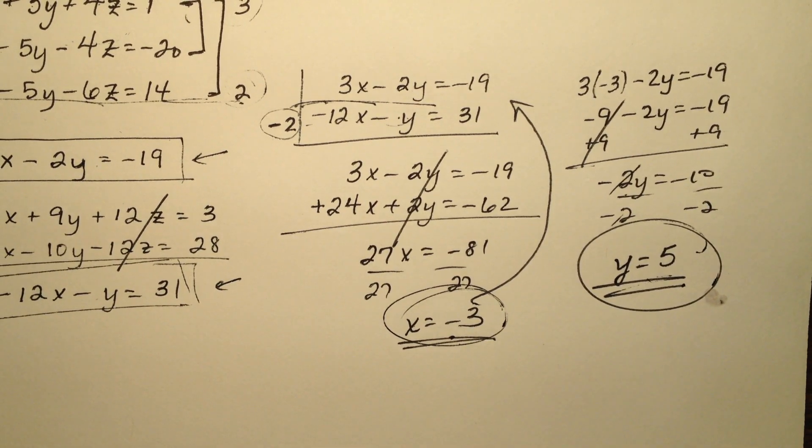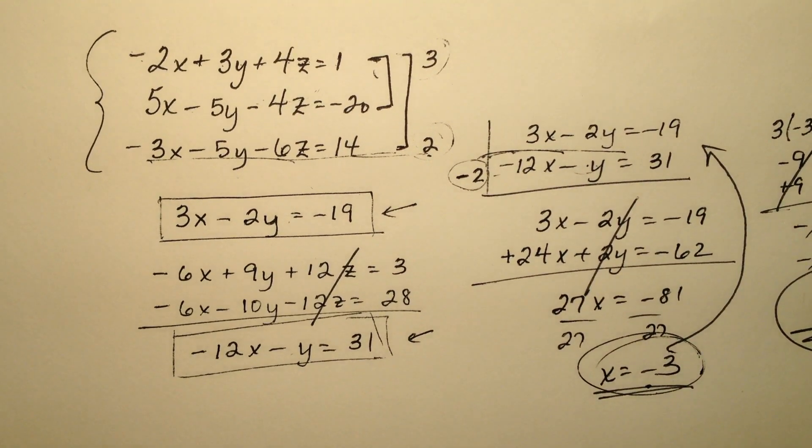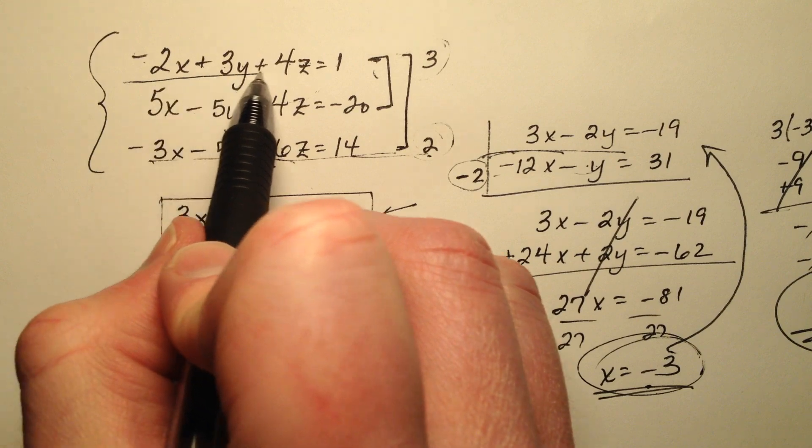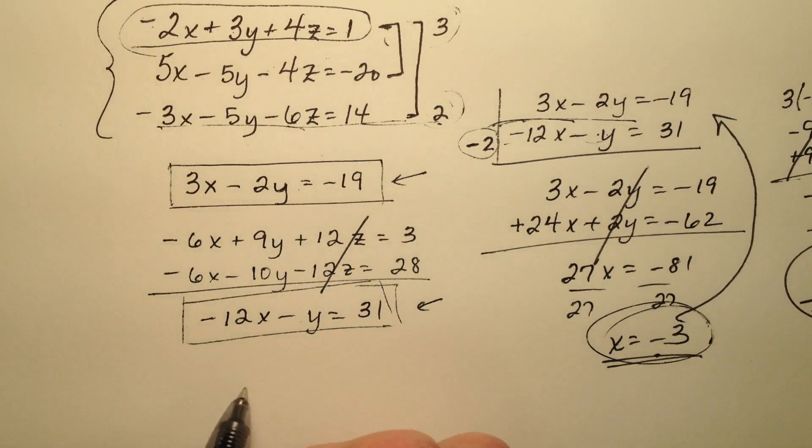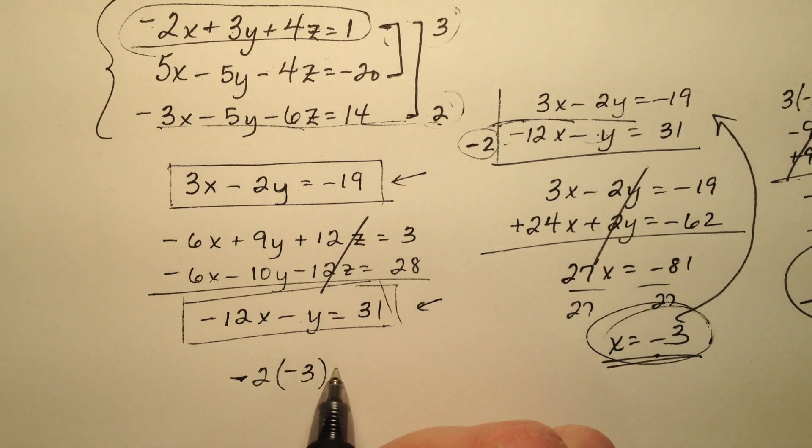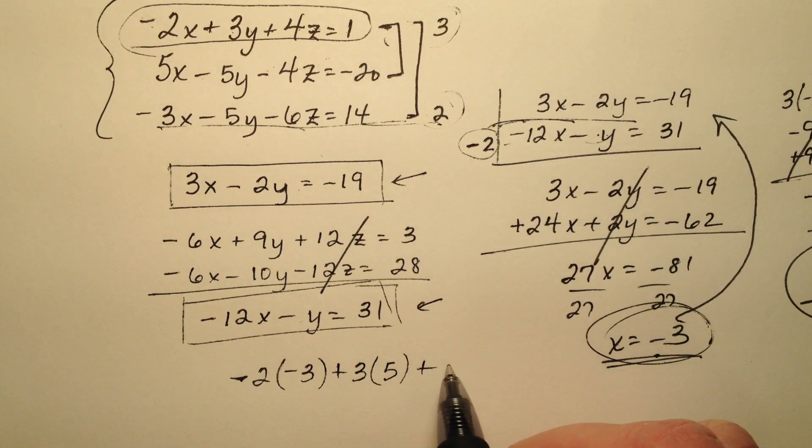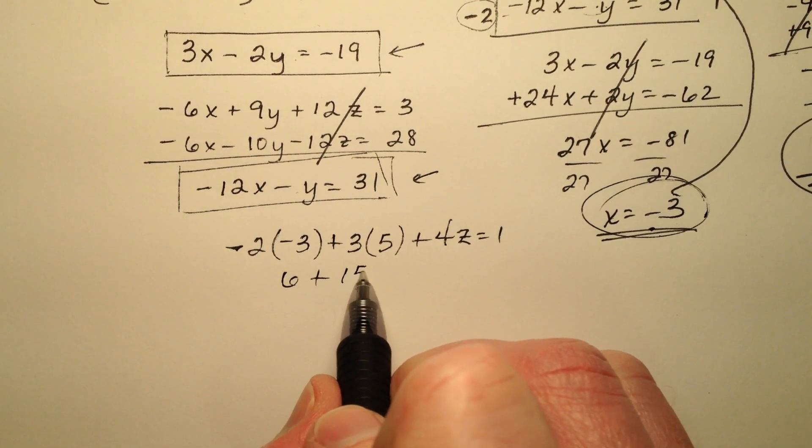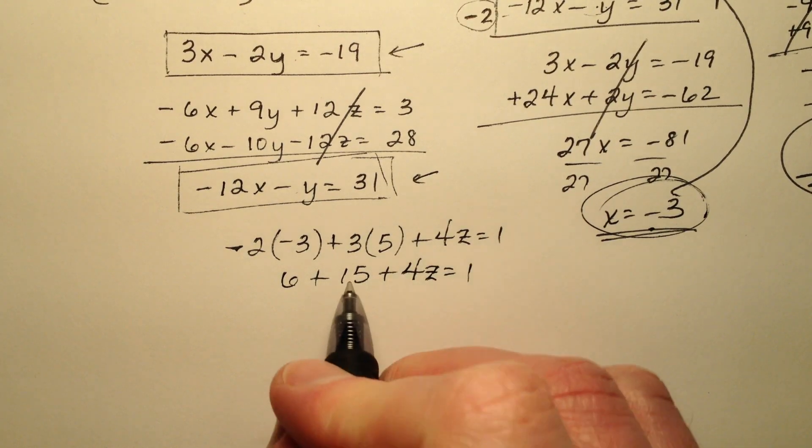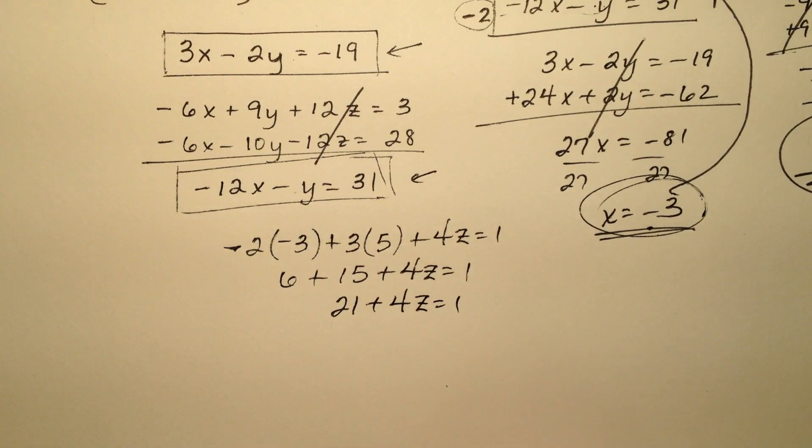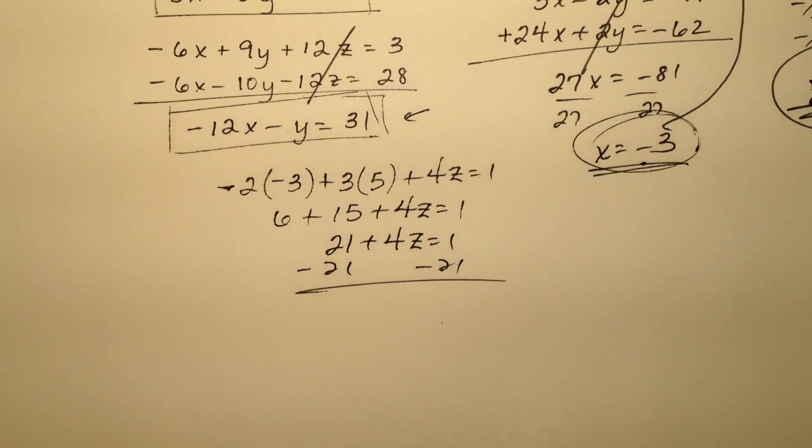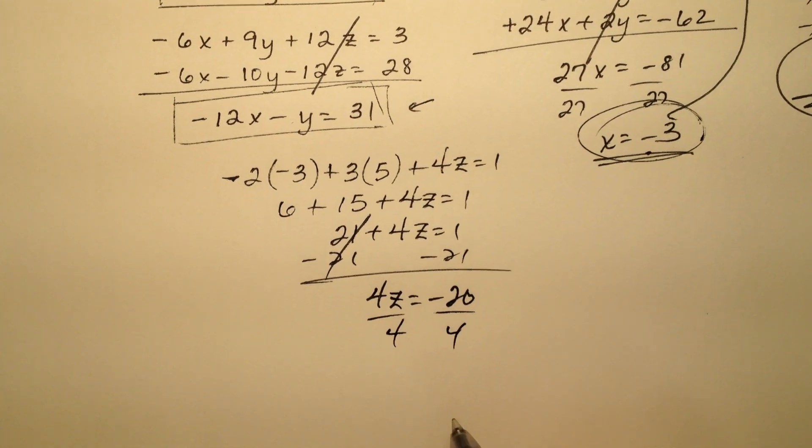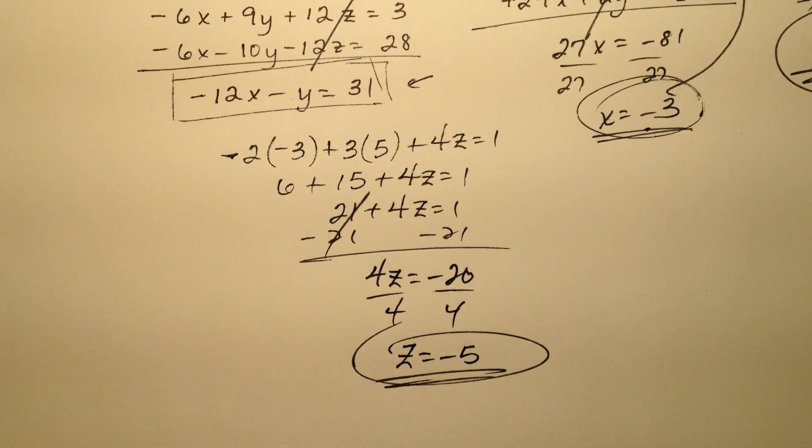So now that I know the values for two of my variables, let's march back over here and let's go ahead and choose one of these initial equations to plug my values for x and y back into. So let's do this first one. So I have a negative 2x and my x was negative 3 plus 3y and my y was 5 plus 4z equals 1. So 6 plus 15 plus 4z equals 1. So 21 plus 4z equals 1. So when I subtract 21 from both sides, 4z equals a negative 20. And it looks like when I divide by 4, my z will be negative 5.